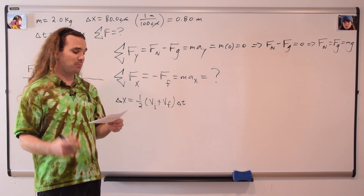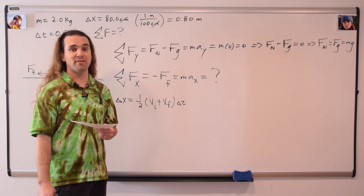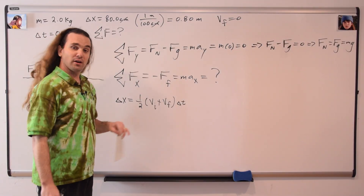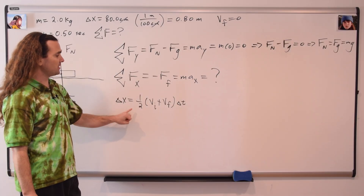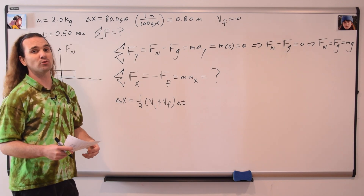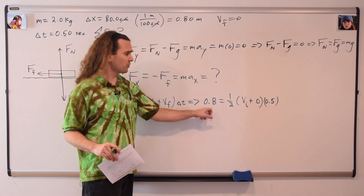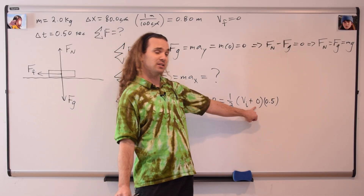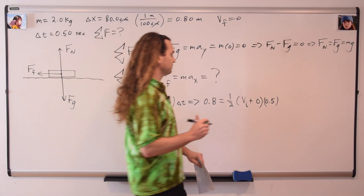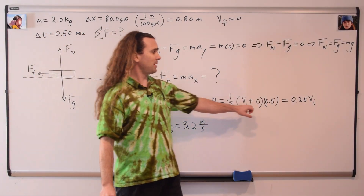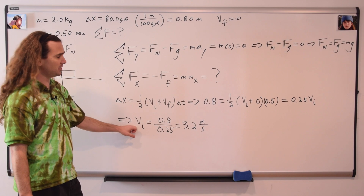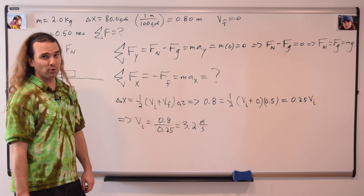One important piece of information is that the mass comes to rest in 0.50 seconds, so the final velocity equals zero. We use the UAM equation: displacement equals one-half times (velocity initial plus velocity final) times the change in time. Substituting in: 0.8 equals one-half times (v-initial plus zero) times 0.5 seconds. Multiplying one-half by 0.5 gives 0.25 times v-initial. Dividing both sides by 0.25 gives the initial velocity equals 0.8 divided by 0.25, or 3.2 meters per second.